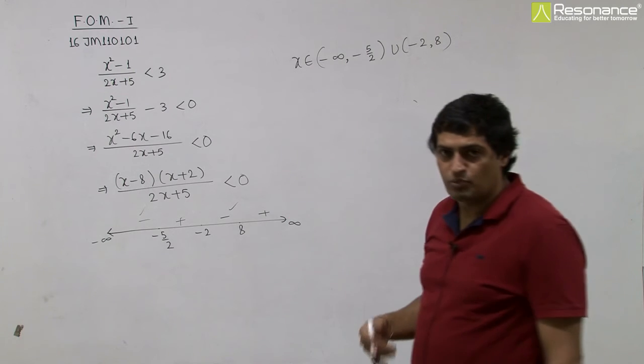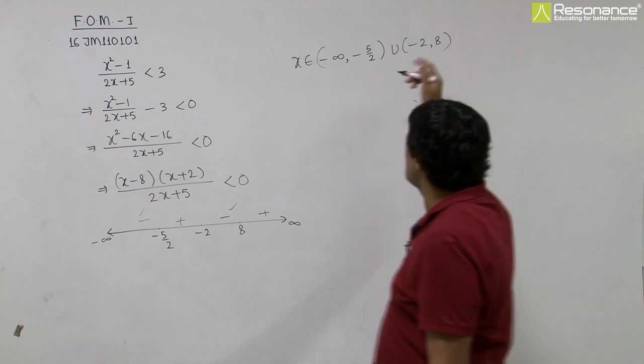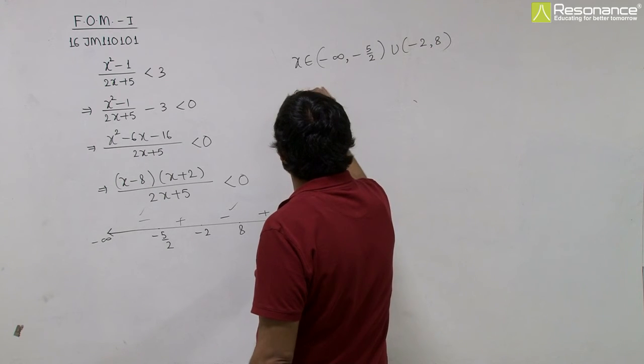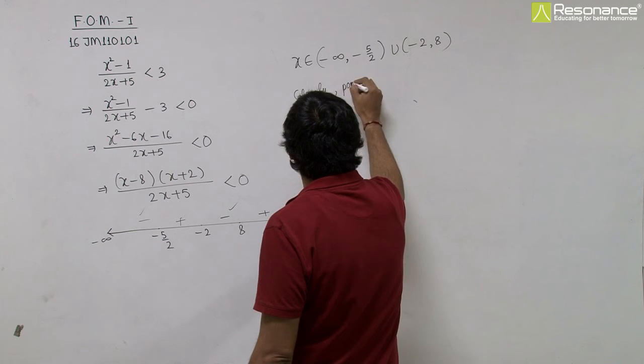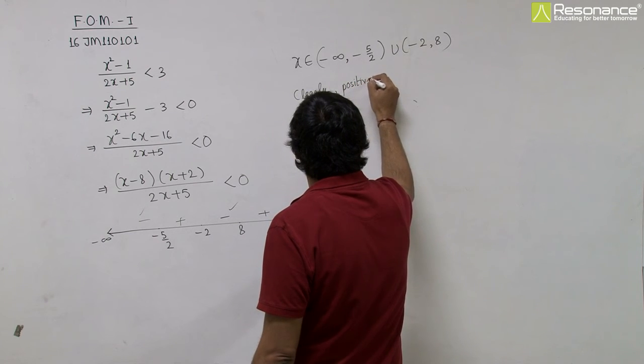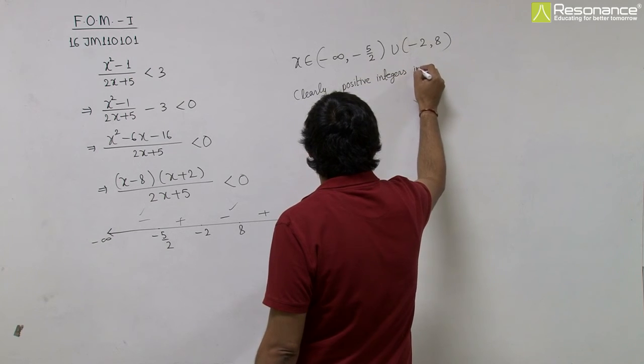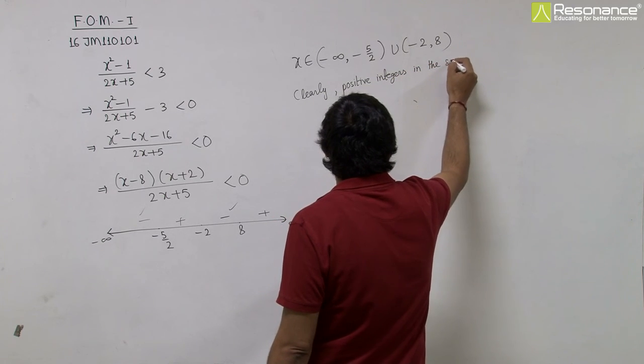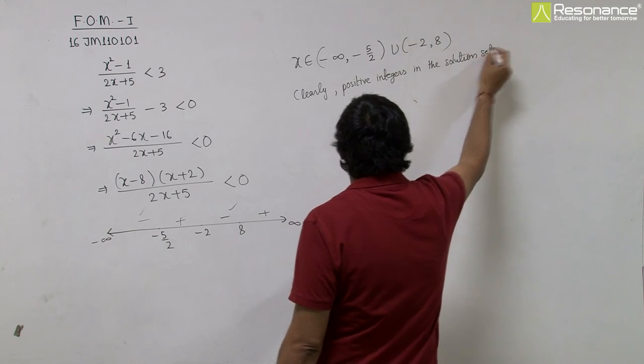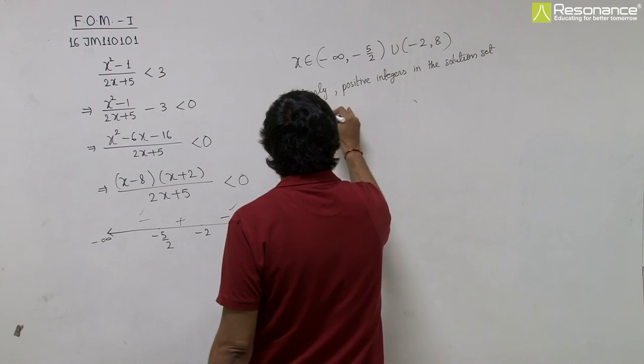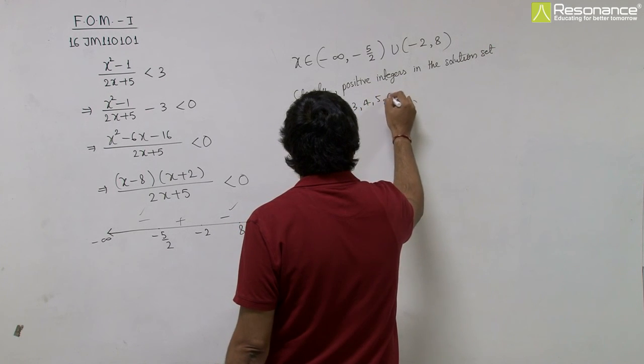Now we have to find number of positive integers. Clearly, the positive integers in the solution set are 1, 2, 3, 4, 5, 6 and 7.